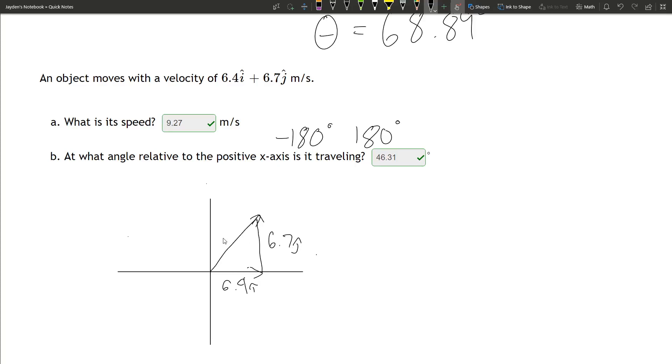This is our speed. v is equal to, again, let's do the Pythagorean theorem. That should give us 9.27 meters per second.